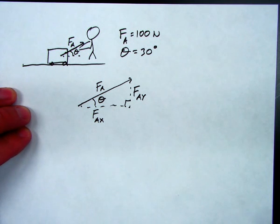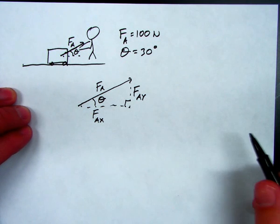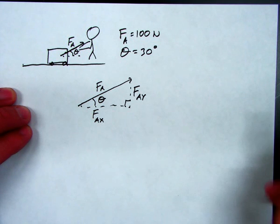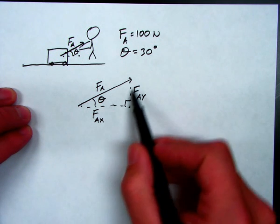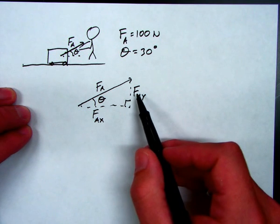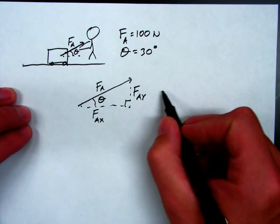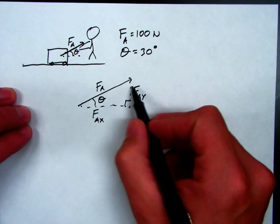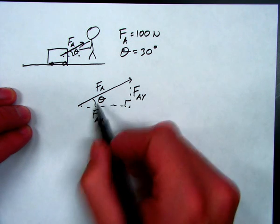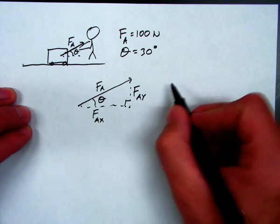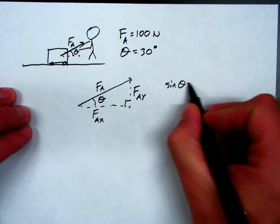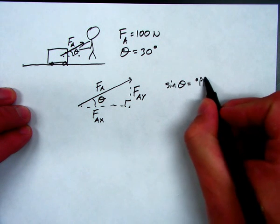So, if you remember your trig, your SOHCAHTOA identities, you remember that the opposite side is equal to the sine of the angle. Let me fix that. The ratio of the opposite side to the hypotenuse is based on the sine of the angle. So, sine of theta is opposite over hypotenuse.